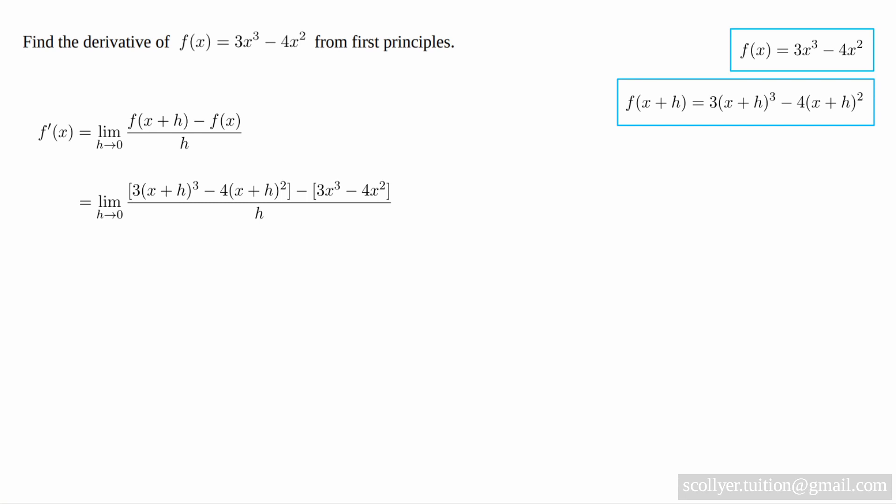Given those two expressions, we obtain the limit as h tends to 0 of 3x plus h cubed minus 4x plus h squared minus 3x cubed minus 4x squared over h.